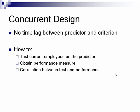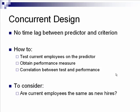Another option is a concurrent criterion design. With this type of design, there's no time lag between when you take the test and when you collect criterion data — job performance ratings. You test current employees on the predictor, obtain performance measures at the same time from their supervisors, and get a correlation between the test and performance. One thing to consider, though, is whether current employees are the same as new hires — and obviously they're not, so that's something to think about.